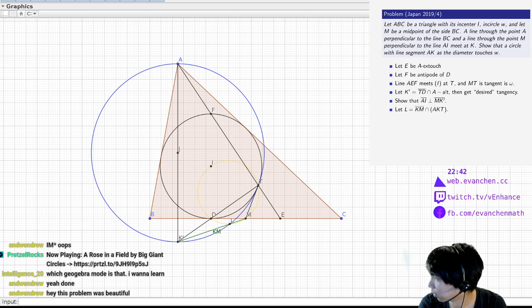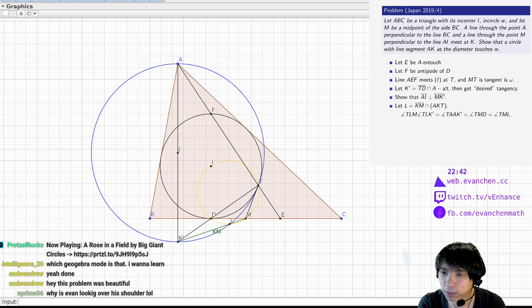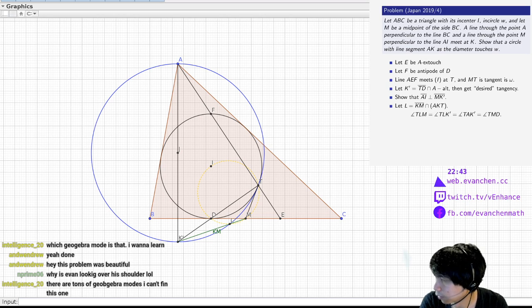Let me get the directed angles right. TLM, it's TLK prime, TK prime, it's DMT, TMD. Let's just do it that way. Okay, fix my angle chase up. There we go, that's better.